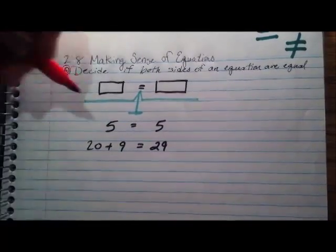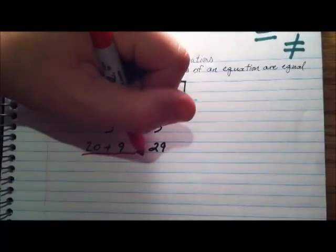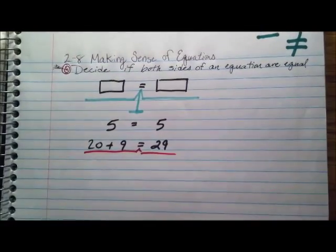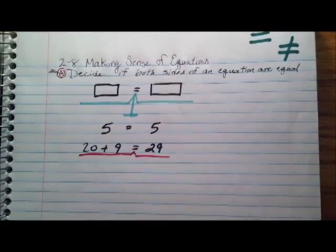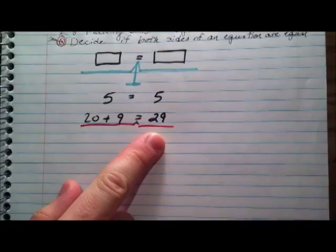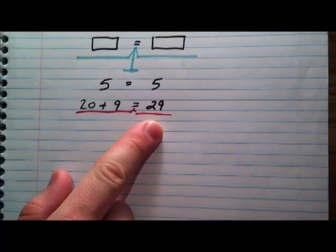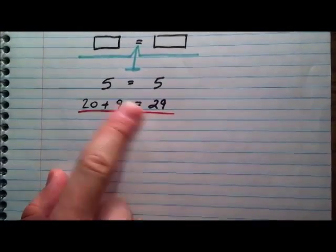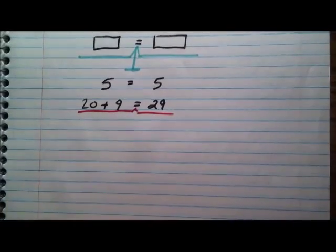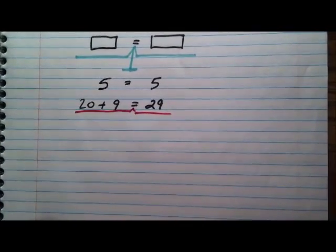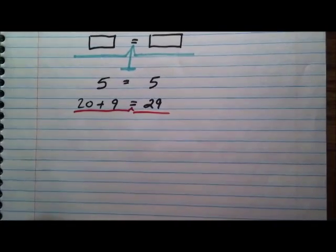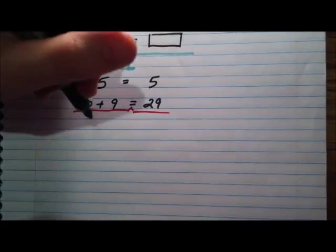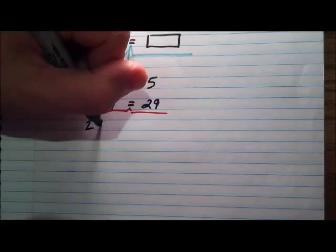We can treat this like the equal arm balance. Whatever is on one side has to be on the other side. We're going to simplify both sides. So this side over here, this is 29. That's simplified as much as it's going to get. This side over here, though, this is 20 plus 9. We can work with that. We can add 20 and 9. You add it up, you get 29.